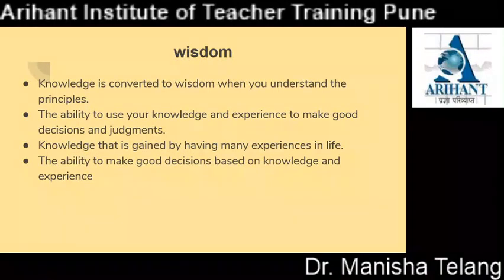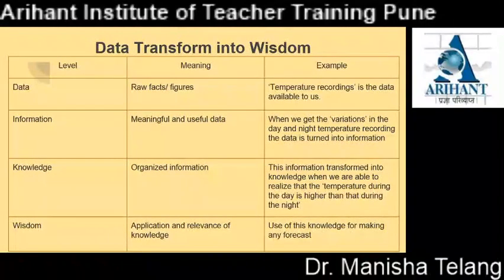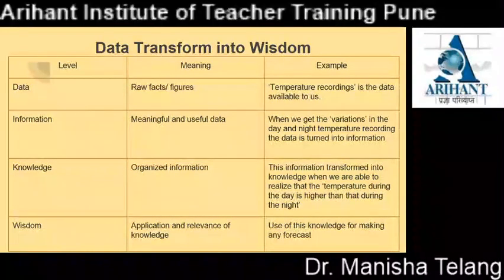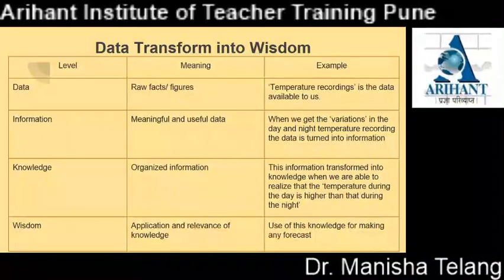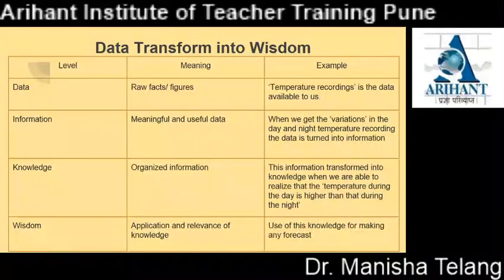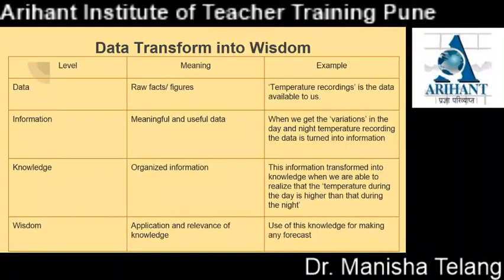We will see one example of how data gets transferred into wisdom. Data means raw facts — example: temperature recordings. Information is meaningful and useful data — when we get the variation in day and night temperature, recording the data is turned into information. Knowledge is organized information — this information transfers into knowledge when we are able to realize that the temperature during the day is higher than during the night. Wisdom is the application and relevance of knowledge — using this knowledge for making any forecast.